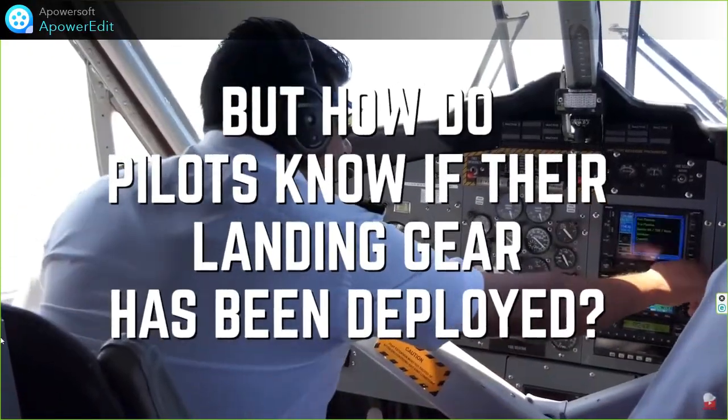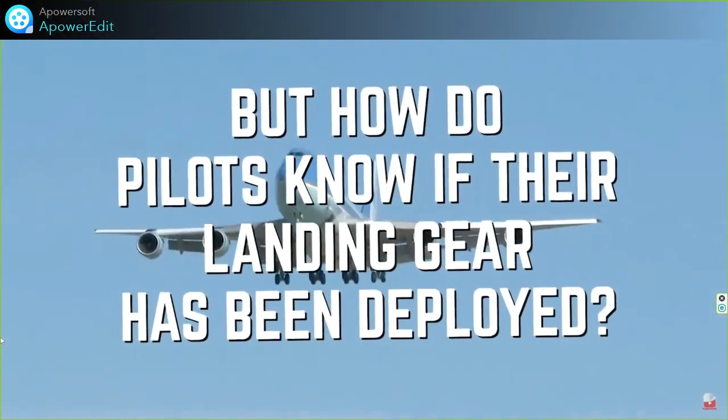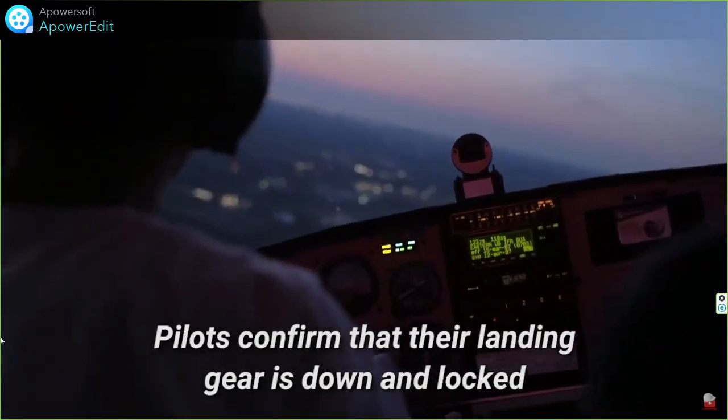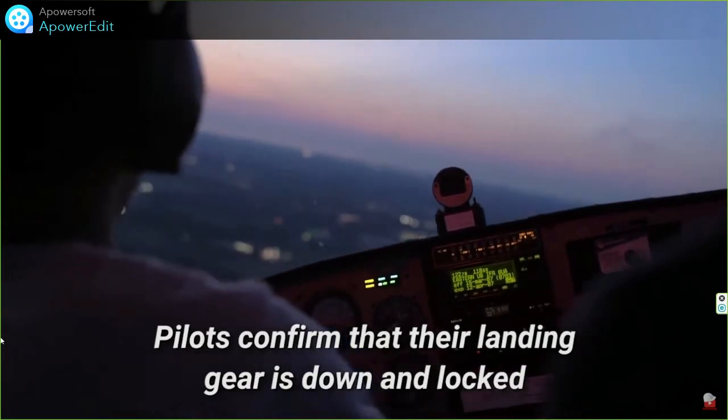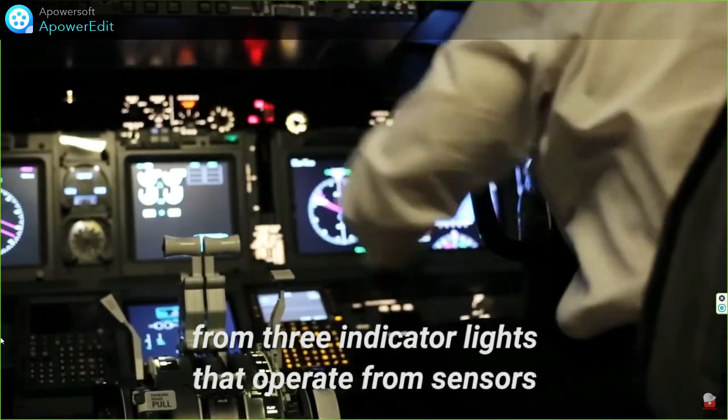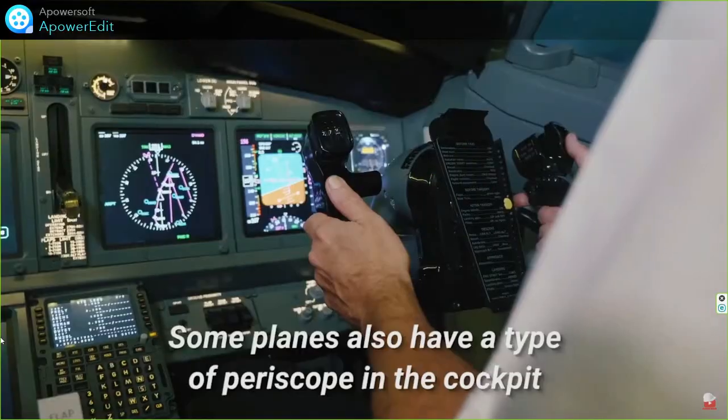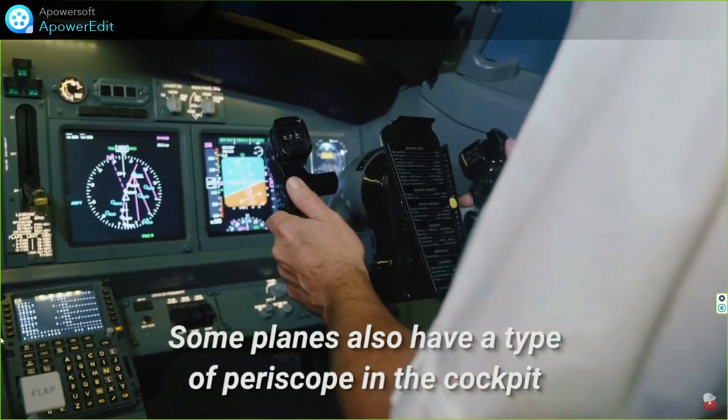But how do pilots know if their landing gear has been deployed? Pilots confirm that their landing gear is down and locked from three indicator lights that operate from sensors. Some planes also have a type of periscope.